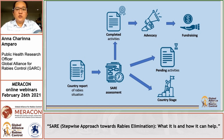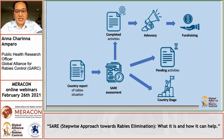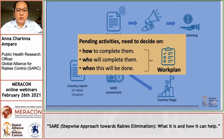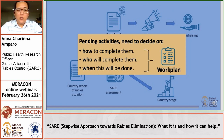The other two major outputs are the list of pending activities and the country stage. The next step would be to go over the list of identified pending activities and decide on how to complete them, who will complete them, and when this will be done. All of this information will be used to populate the rabies work plan.